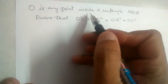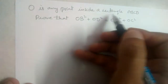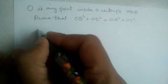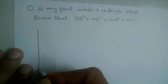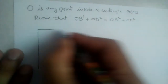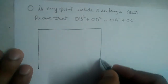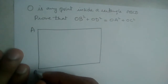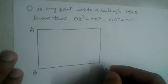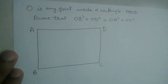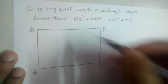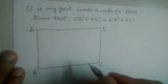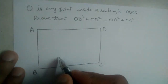O is any point inside a rectangle ABCD. Let us draw a rectangle ABCD — this is the rectangle, and O is any point inside it. It need not be on the diagonal; it can be anywhere, so let us take it here.